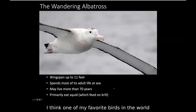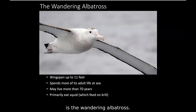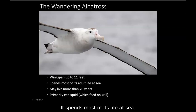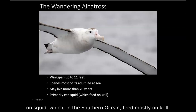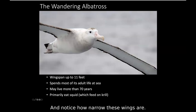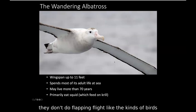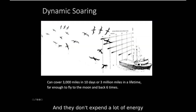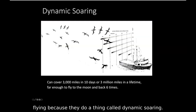One of my favorite birds in the world is the wandering albatross — physiologically and anatomically it's an amazing, beautiful bird. It's the largest of the albatrosses, can weigh around 22 pounds, and its wingspan can be up to 11 feet. It spends most of its life at sea and is a surface feeder primarily eating squid, which in the Southern Ocean feed mostly on krill. Notice how narrow the wings are — they don't do flapping flight like the birds around here. You'll only find albatrosses where you have strong winds in the open ocean; they're truly pelagic birds.